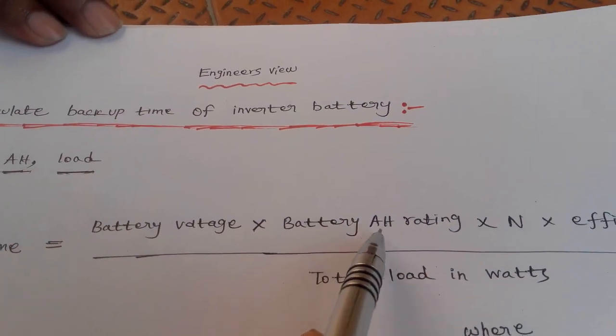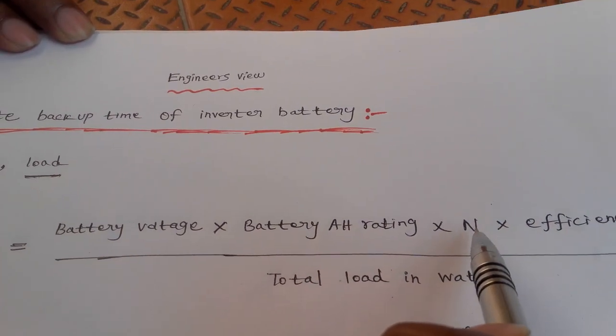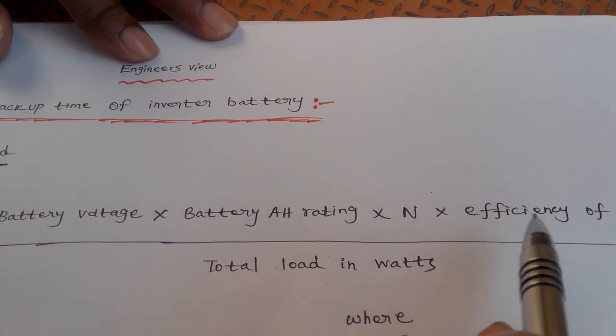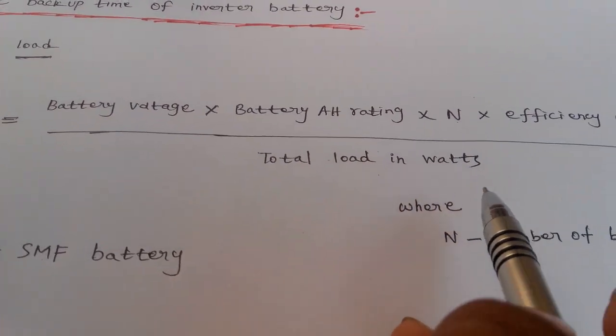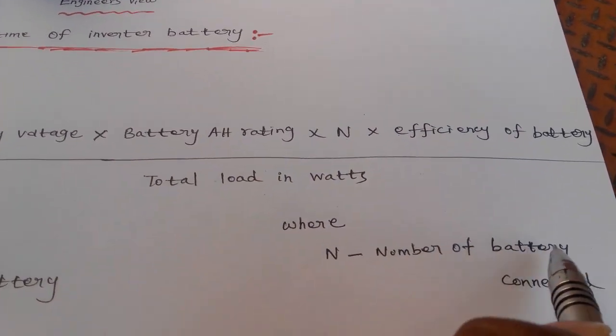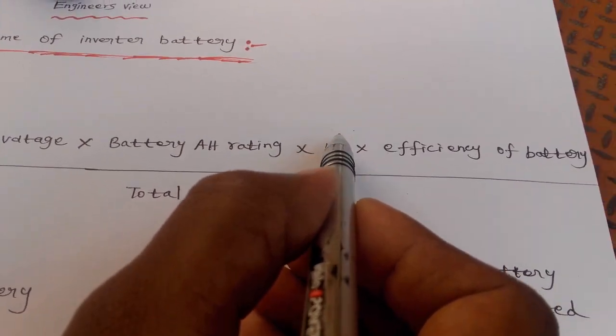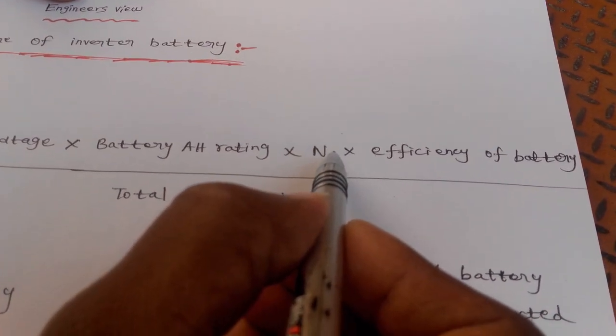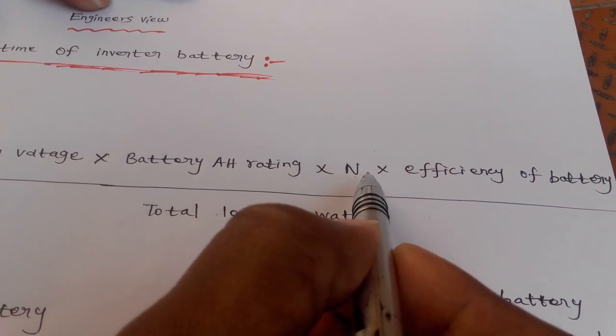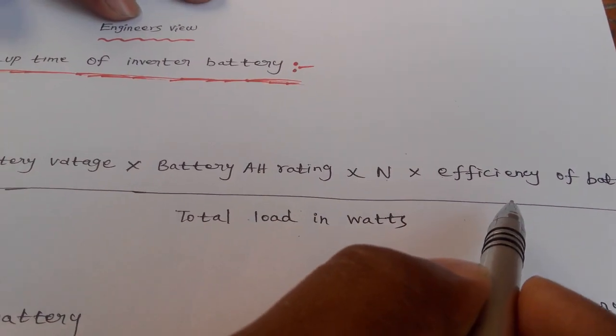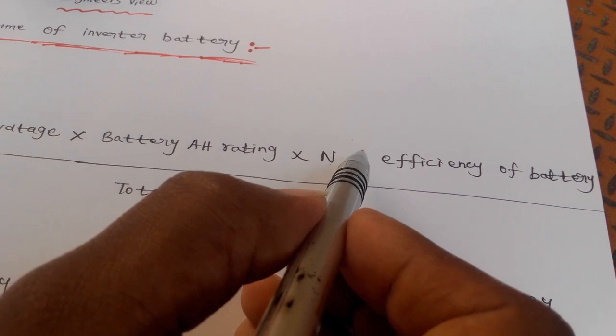Here N is the number of batteries connected. Suppose if we use one battery in the backup time, N equals 1. Suppose if we use two batteries in the backup time, then N equals 2.